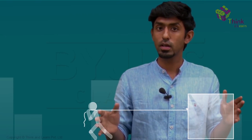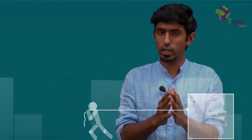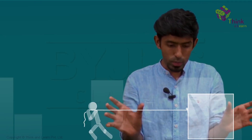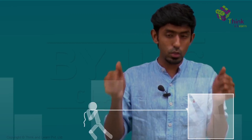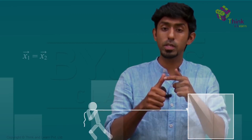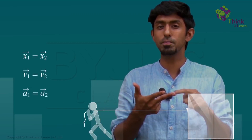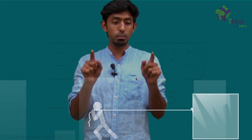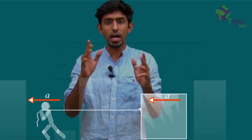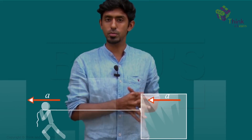Otherwise, this would not happen. So both these arguments you can use to show that in such a scenario — where two objects are connected by an inextensible string and the movement happens in a direction where the string is going to remain taut — the two bodies must have the same displacement, the same velocities, and the same accelerations. Now imagine that this man is pulling that block, dragging it along with him, such that both of them have an acceleration of A. You know one of them must have A — that's what we have shown in the previous part.